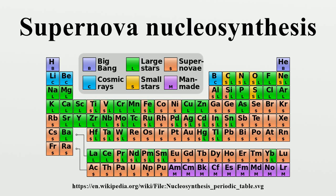After a star completes the oxygen-burning process, its core is composed primarily of silicon and sulfur. If it has sufficiently high mass, it further contracts until its core reaches temperatures in the range of 2.7–3.5 GK. At these temperatures, silicon and other elements photodisintegrate by energetic thermal photons ejecting alpha particles. Silicon burning differs from earlier fusion stages of nucleosynthesis in that it entails a balance between alpha particle captures and their inverse photoejection, which establishes abundances of all alpha particle elements in the following sequence, in which each alpha particle capture is opposed by its inverse reaction, namely photoejection of an alpha particle by abundant thermal photons.